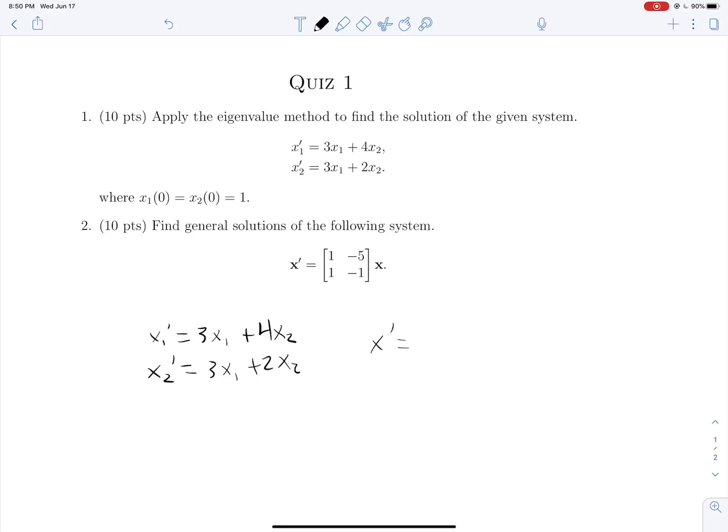So we'll have x prime is equal to the matrix 3, 4, 3, 2, times x. And this works out because if we were to expand x prime and x here, really, this is a column vector x1 prime and x2 prime set equal to 3, 4, 3, 2, and that's all multiplied by x1, x2. And if you multiply this thing out, you'll see that we get the exact same set of equations that we have up here.